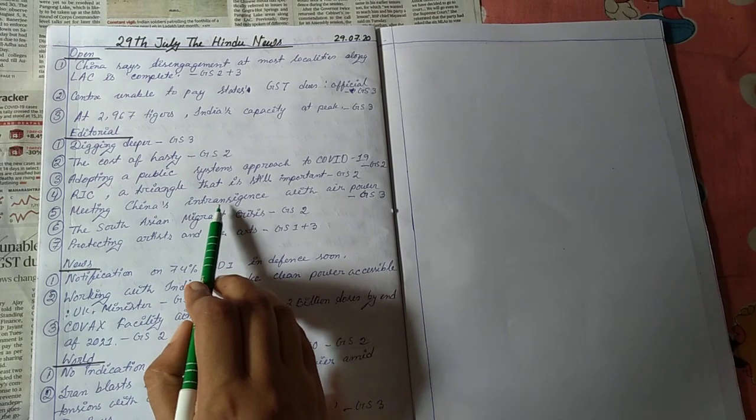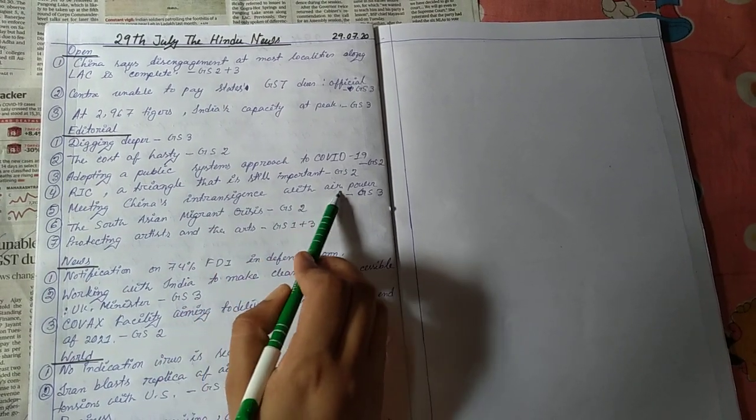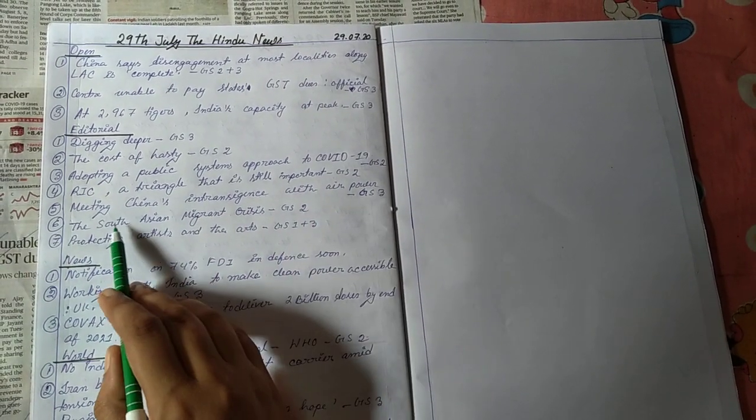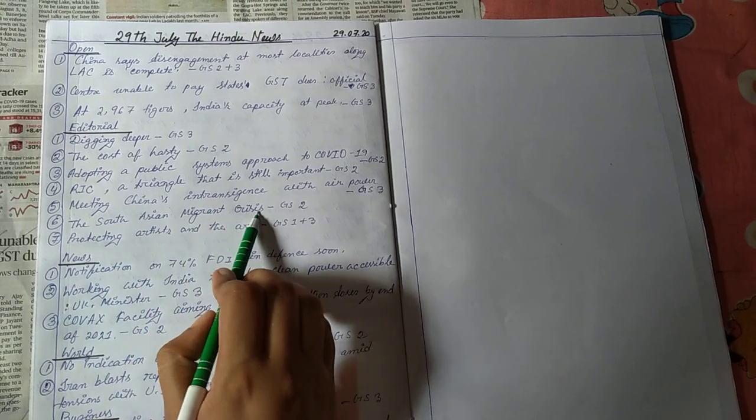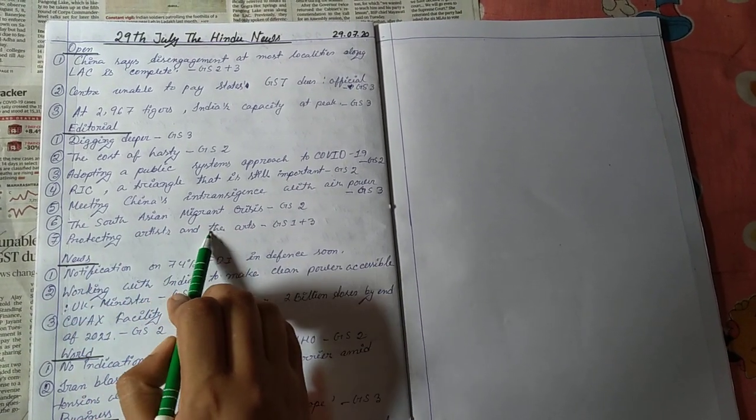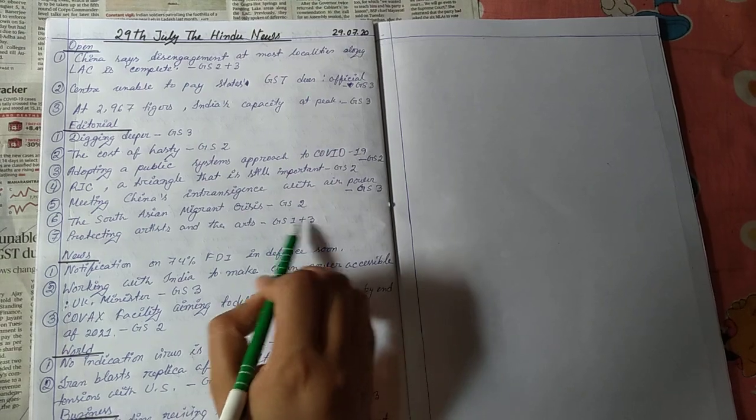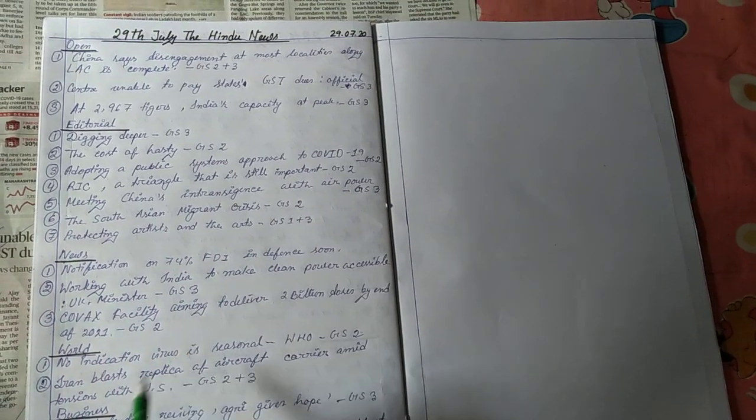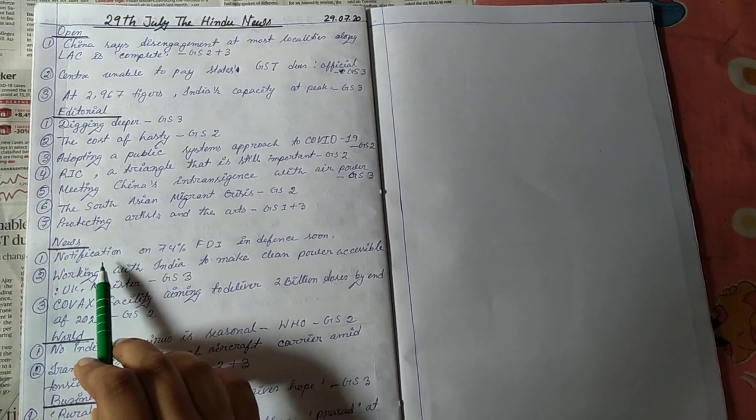Meeting China's intransigence with air power, GS paper 3, the South Asian migrant crisis, GS paper 2, protecting artists and the arts, GS paper 1 and 3, both culture and economy integrated way. Then the news section.